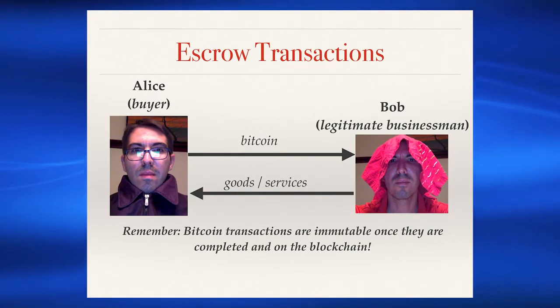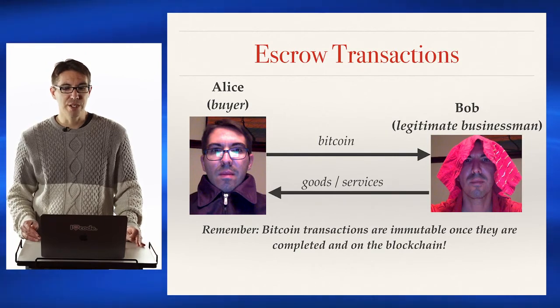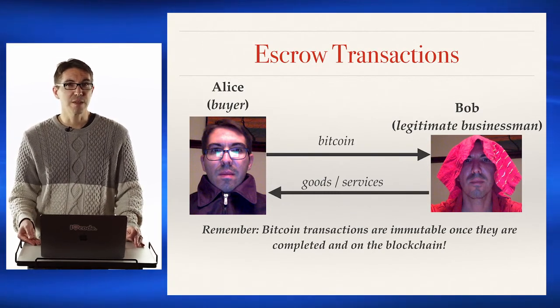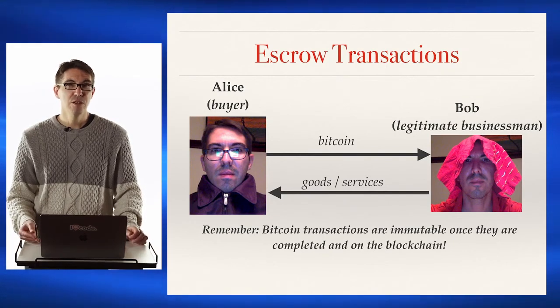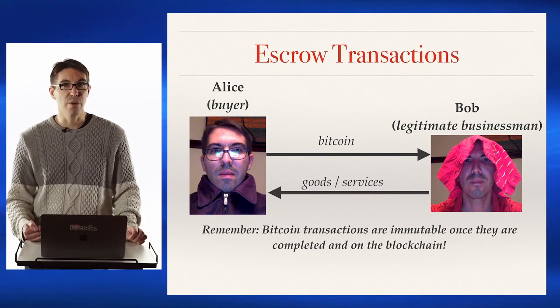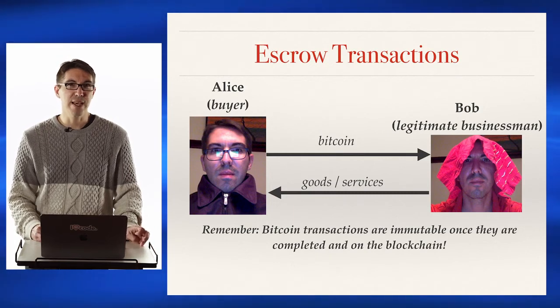BIP 11 is a useful tangent for understanding Bitcoin and blockchain as programmable money. Let's say Alice would like to buy something from Bob, who is a legitimate businessman. Alice is going to send some Bitcoin to Bob and Bob will send goods and services in return. Bitcoin transactions, once completed on the blockchain with a few blocks on top of them, are as close as one can possibly get to immutable — they're never going to be changed. So if Alice sends her Bitcoin to Bob but Bob doesn't provide the services he promised, what can Alice do? She can't talk to the CEO of Bitcoin and say the transaction should be reversed.